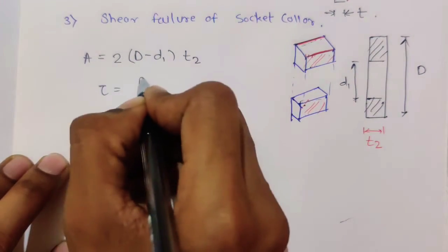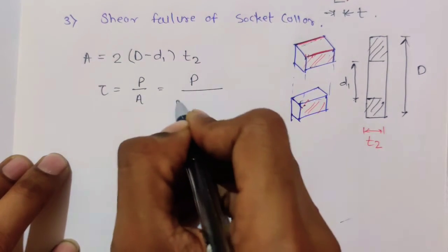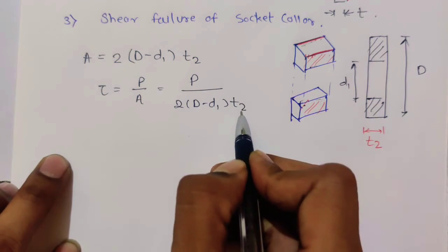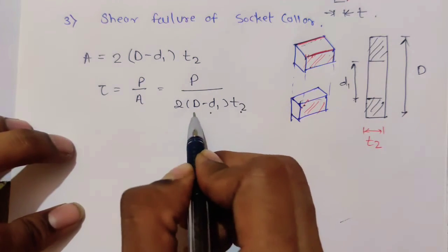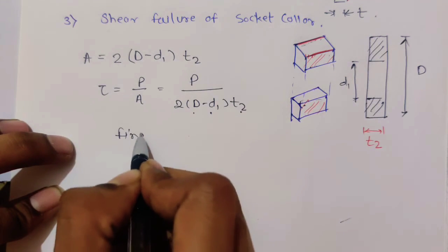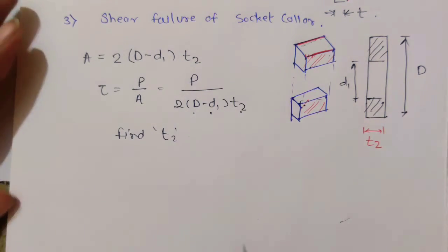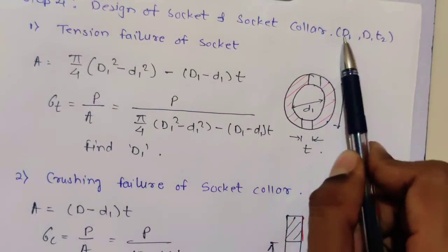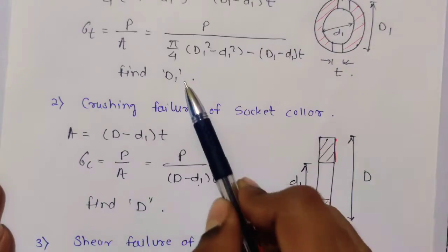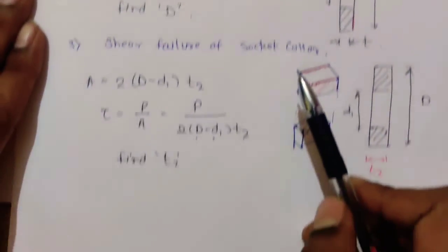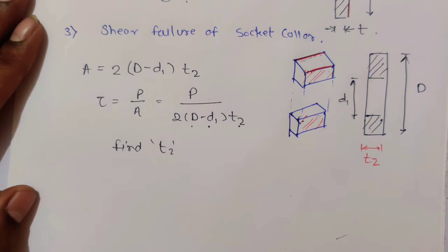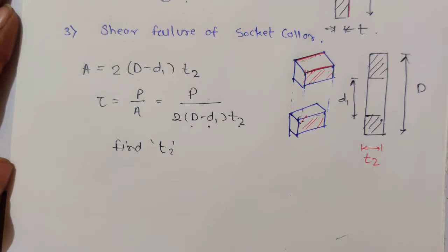The area is (D − D1) × D2, but there are two areas — one in front and one behind — so total area = 2 × (D − D1) × D2. Therefore, tau = P / [2 × (D − D1) × D2]. You know T (thickness), D, and D1, so you can find D2. We wanted three dimensions: D1, D, and D2 — now we have all three, so socket and collar design is done.